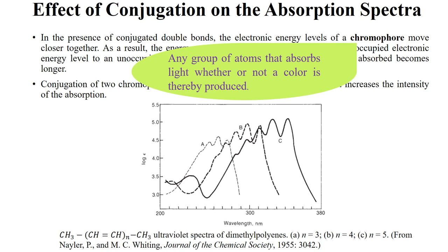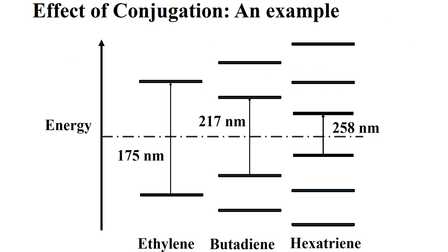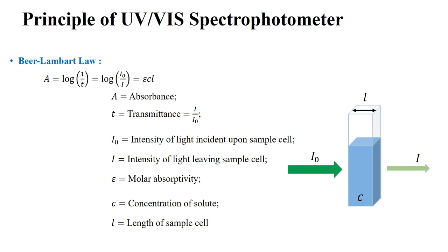Looking at energy levels and associated transitions: for ethylene the transition occurs at a certain wavelength; for butadiene it is at 217 nanometers, meaning lower energy than ethylene; and for hexatriene the wavelength is 258 nanometers — the maximum among these three. Since energy is inversely proportional to wavelength, the larger the wavelength, the smaller the energy difference between states.